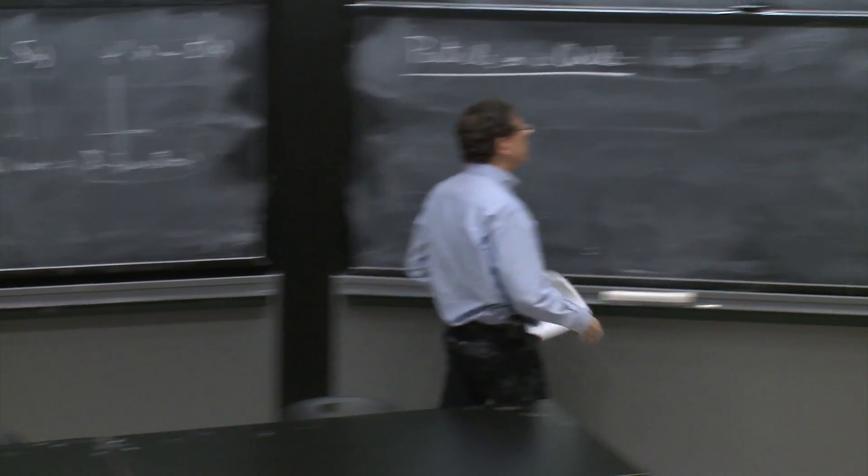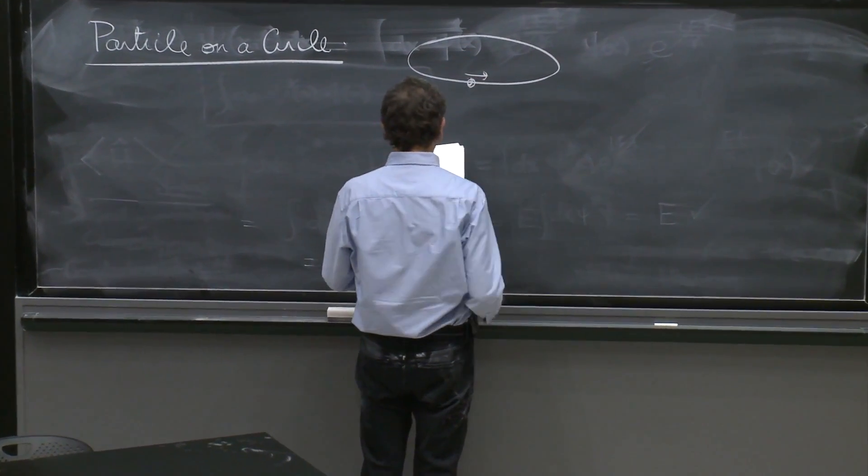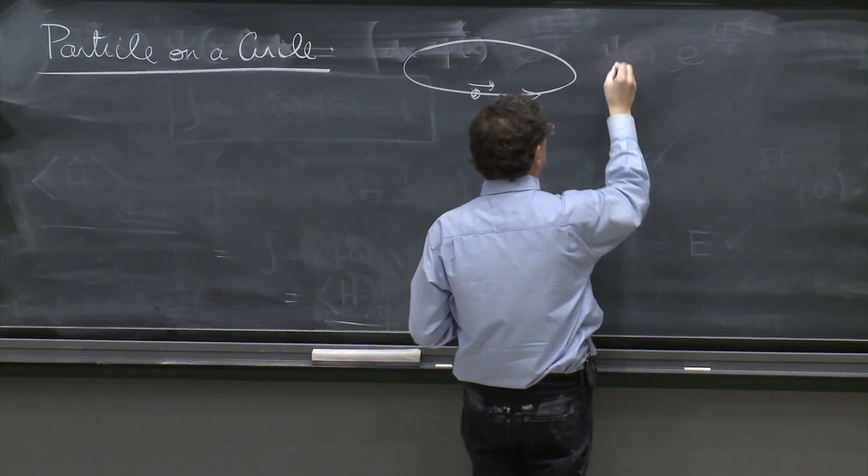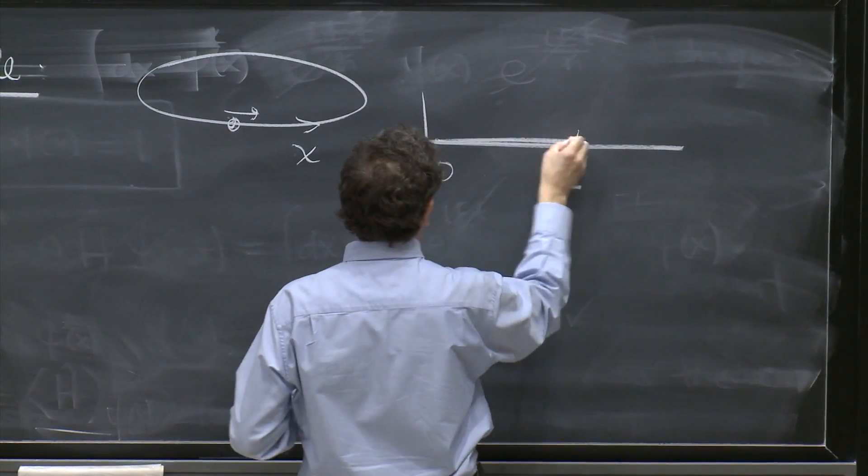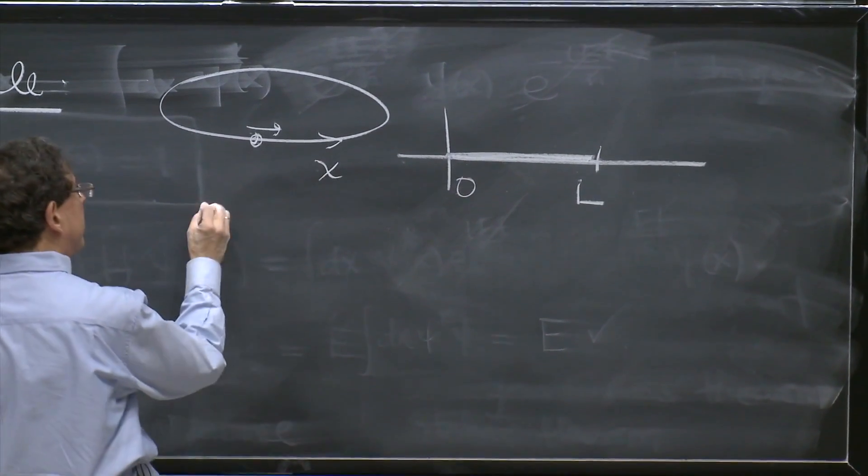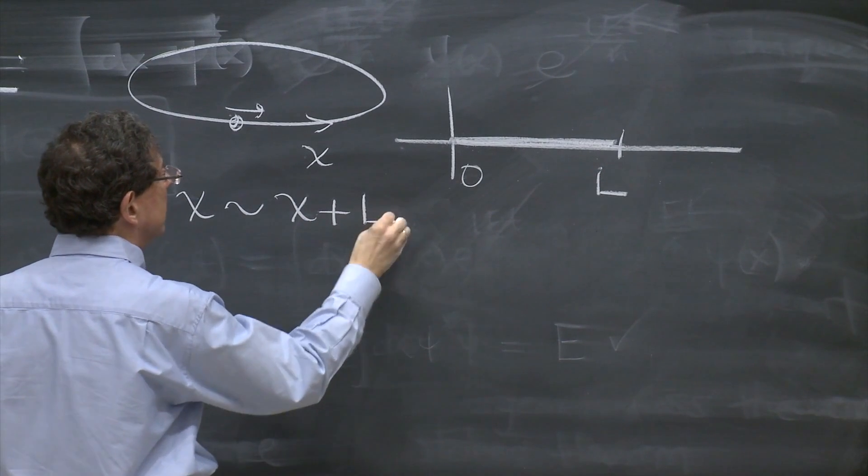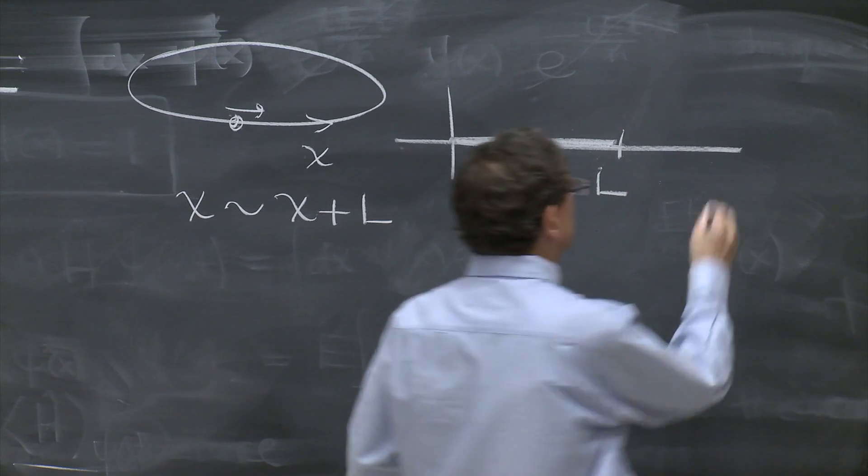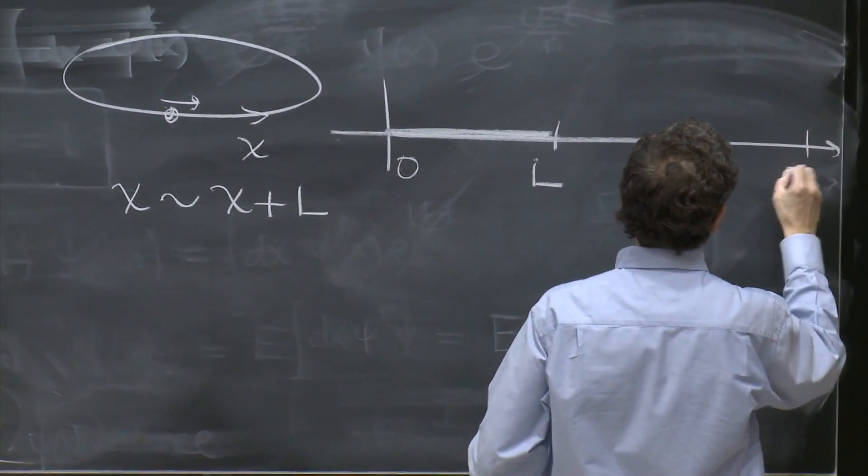So we have a particle on a circle, which means a particle moving here. And this is the coordinate x. And x goes from 0 to L. And we think of this point and that point identified. We actually write this as x is the same as x plus L. This is a strange way of saying things, but it's actually very practical. It's 2L, 3L.